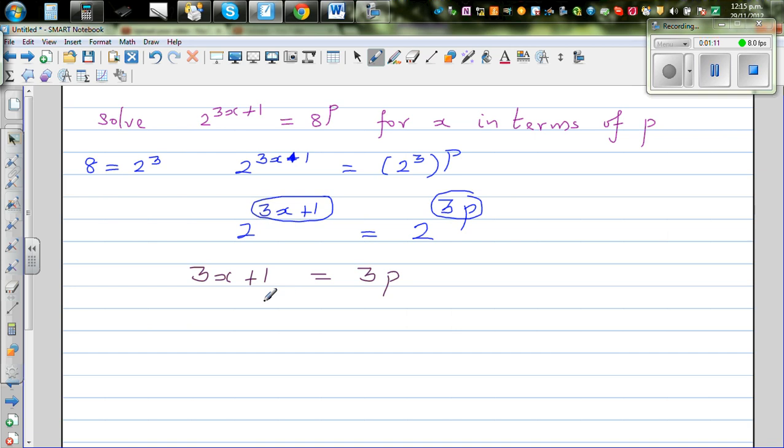Now taking away 1 from both sides, I can write 3x is equal to 3p minus 1. And now dividing both sides by 3, x is equal to 3p minus 1 over 3.